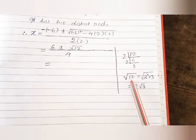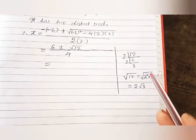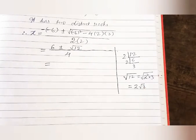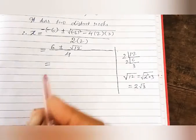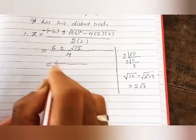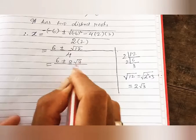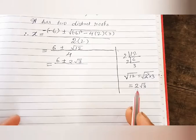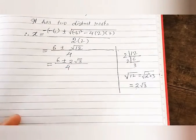√(2² × 3) = 2√3, since the square root of 2² is 2 and √3 remains. So instead of √12 we write 2√3. Therefore x = (6 ± 2√3) / 4.